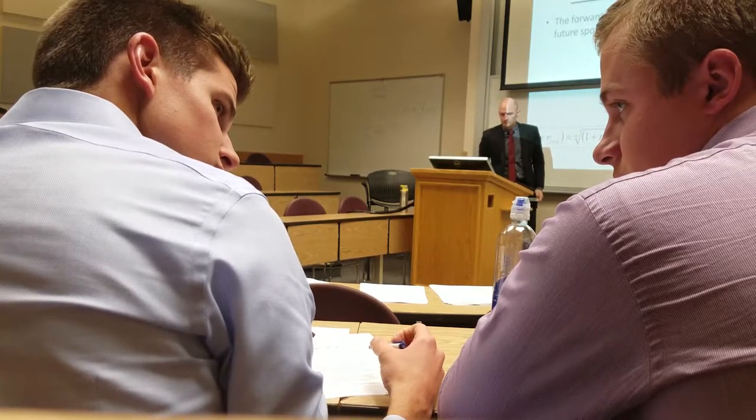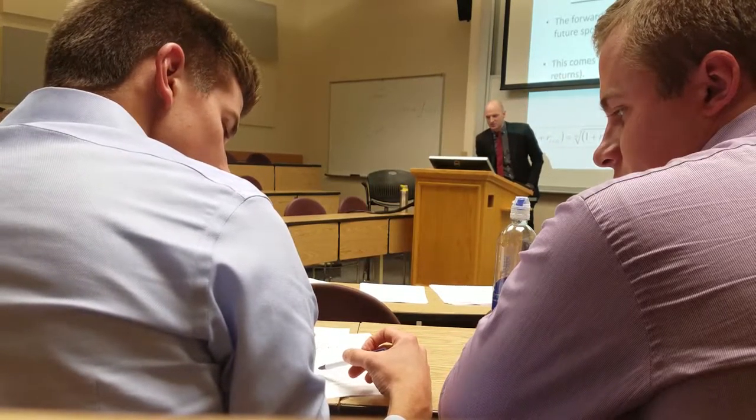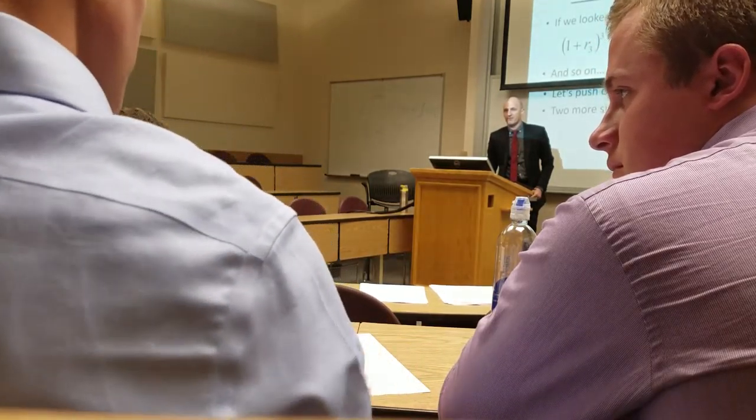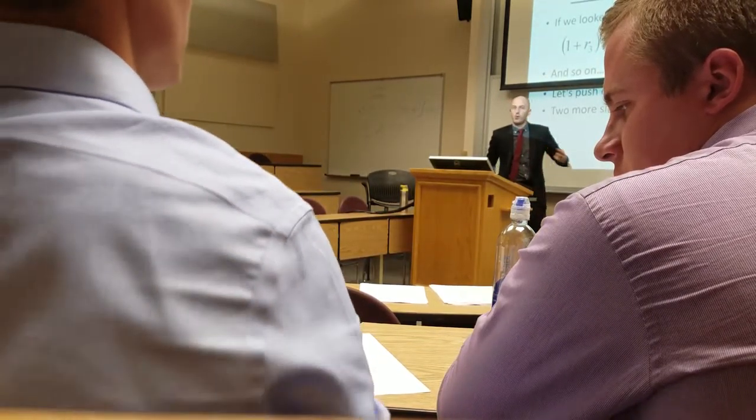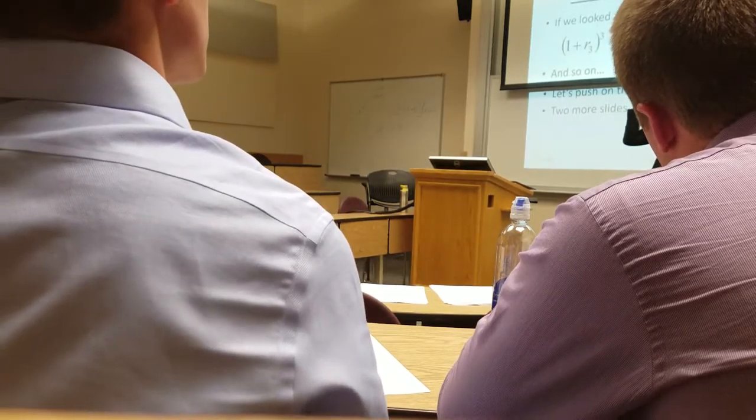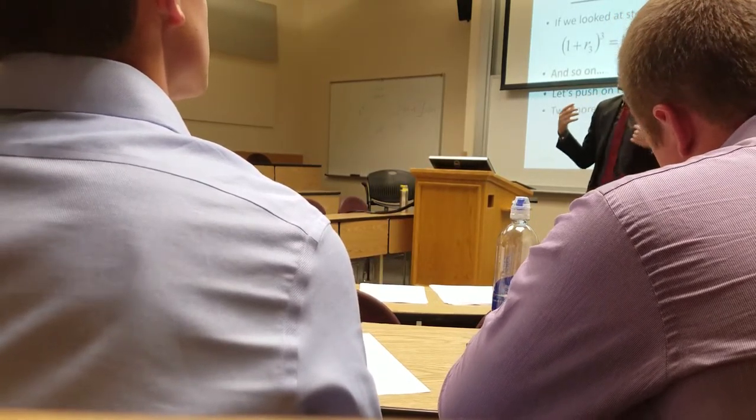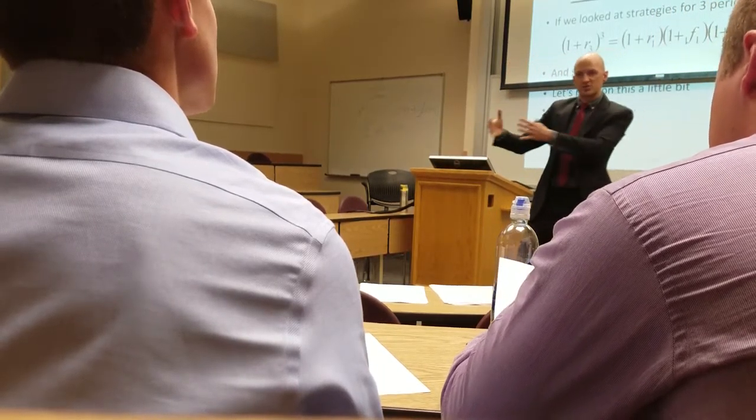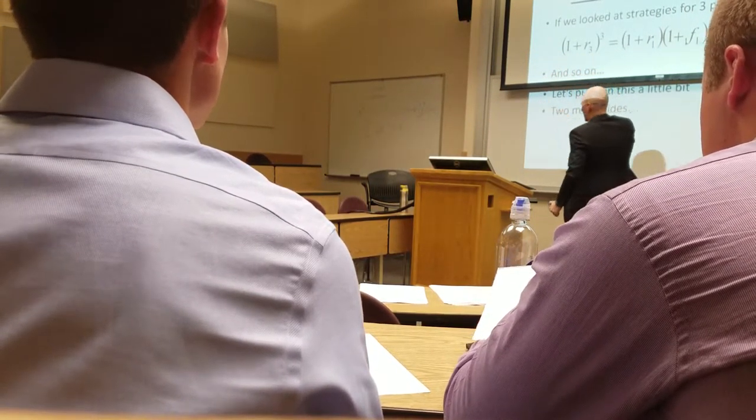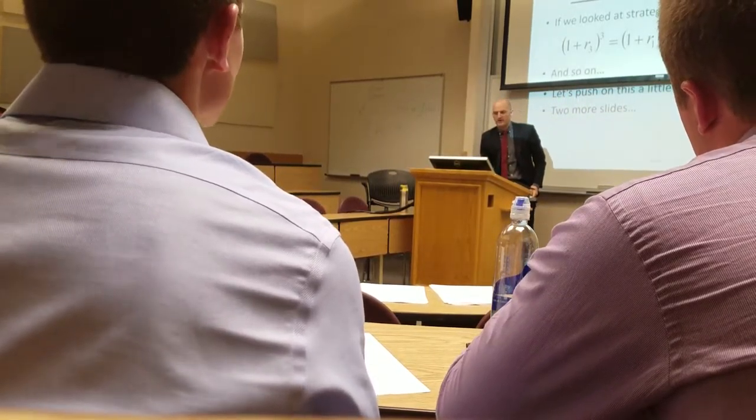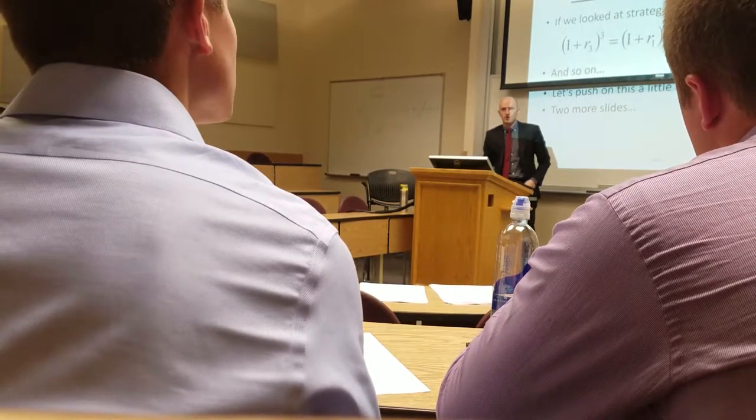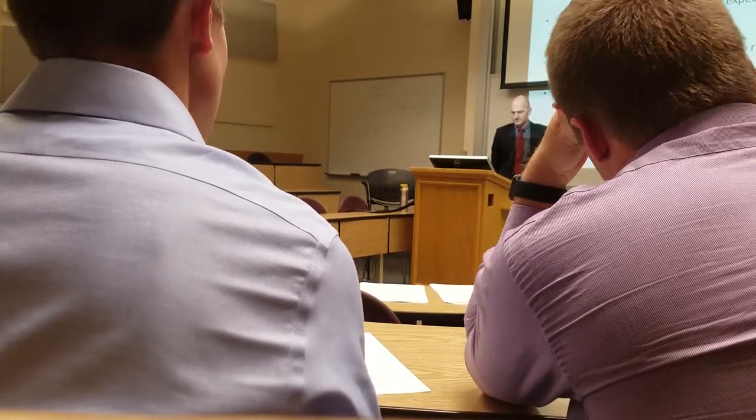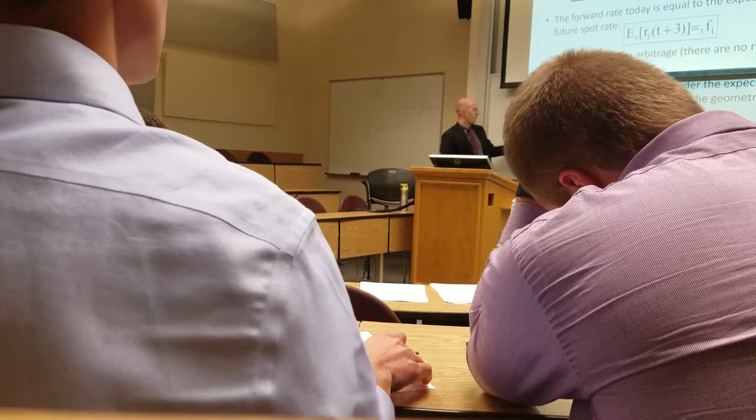Because if these two are equal to each other, then I can go back to that equation that we had from the expectations hypothesis. And remember, the problem was we're trying to explain these three characteristics, but we got forward rates everywhere. I want a relationship between long-term rates and short-term rates, not a relationship between long-term rates and short-term rates and forward rates. If there's no arbitrage, then what I can do is I can replace all of these forward rates with their expectation of future short-term rates.